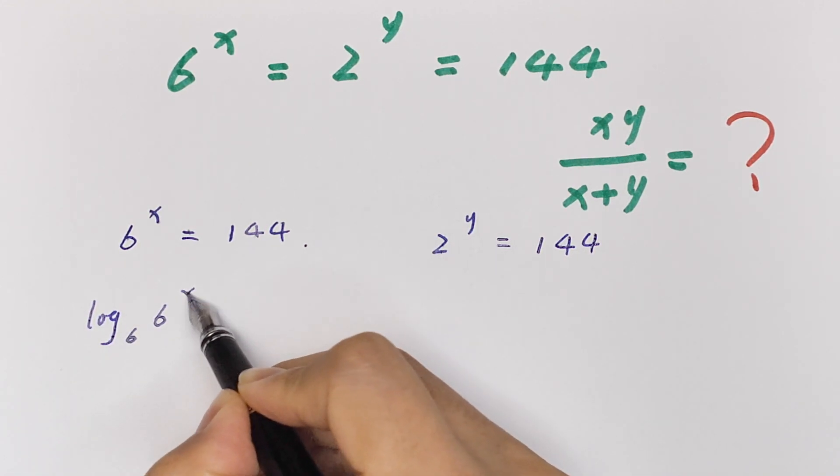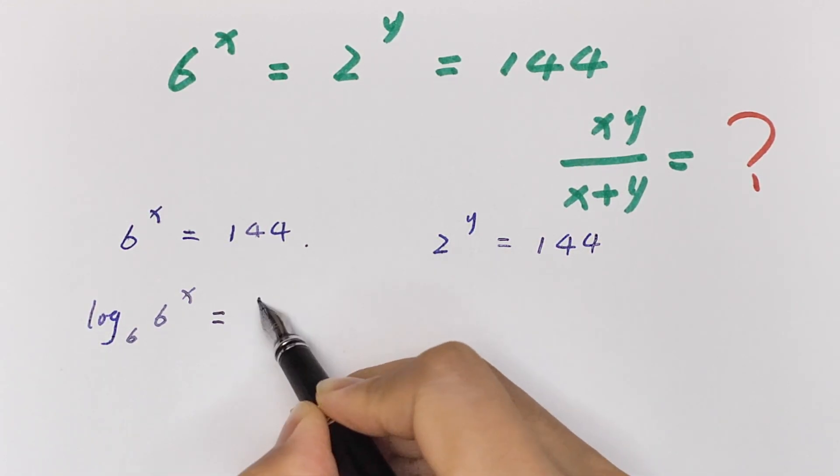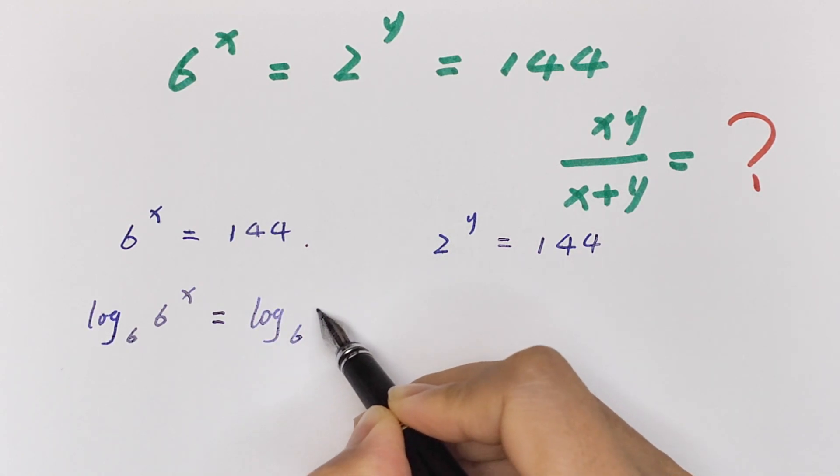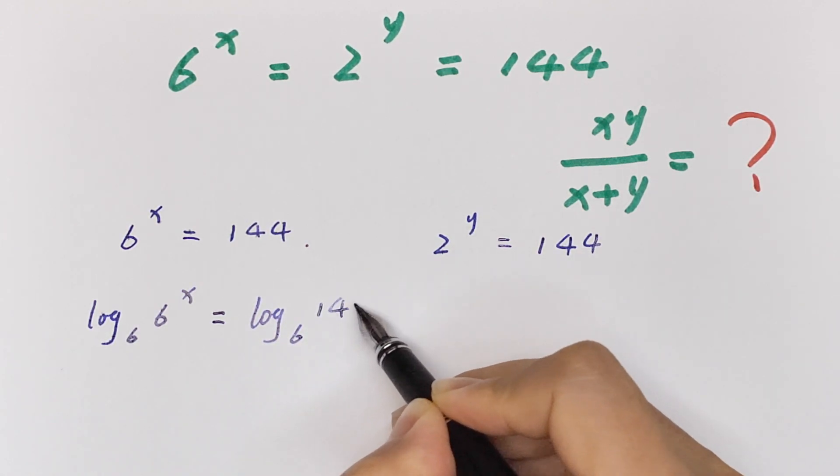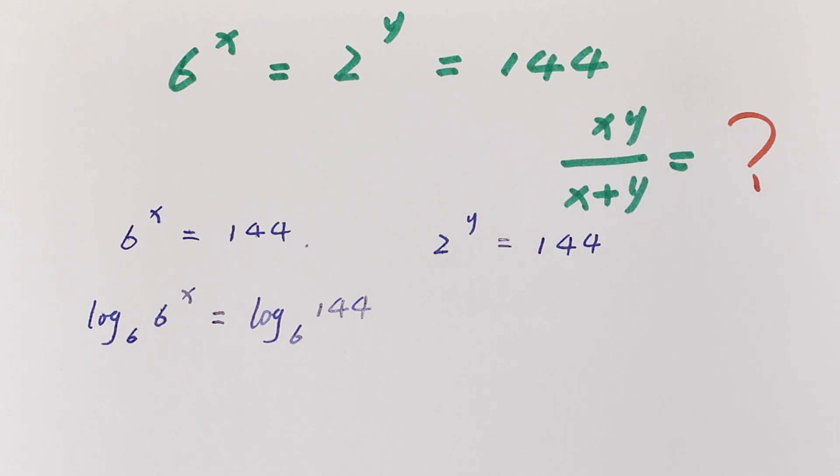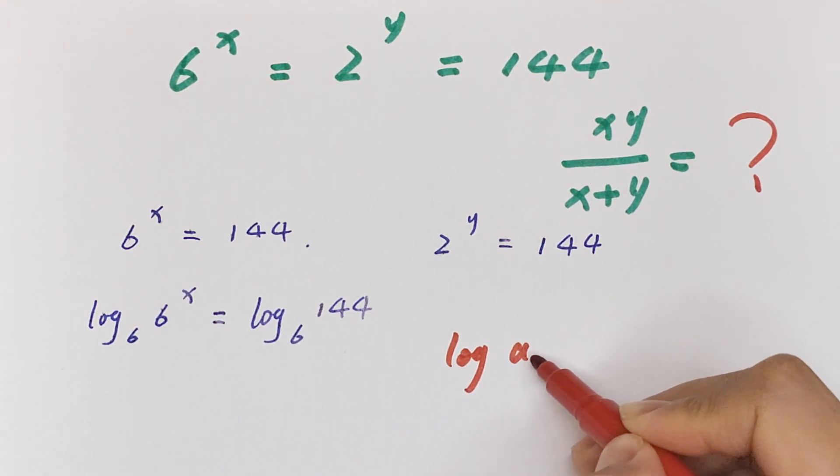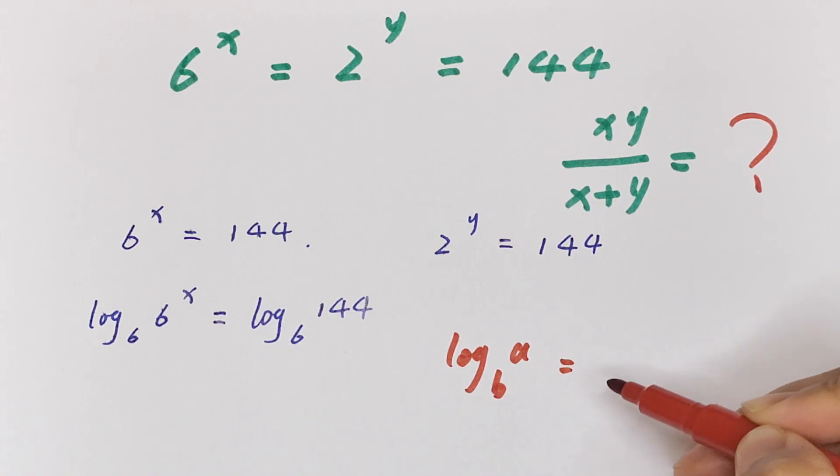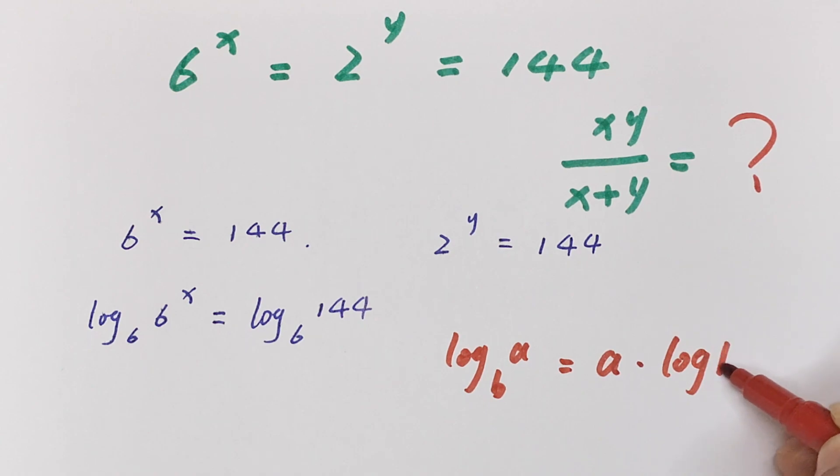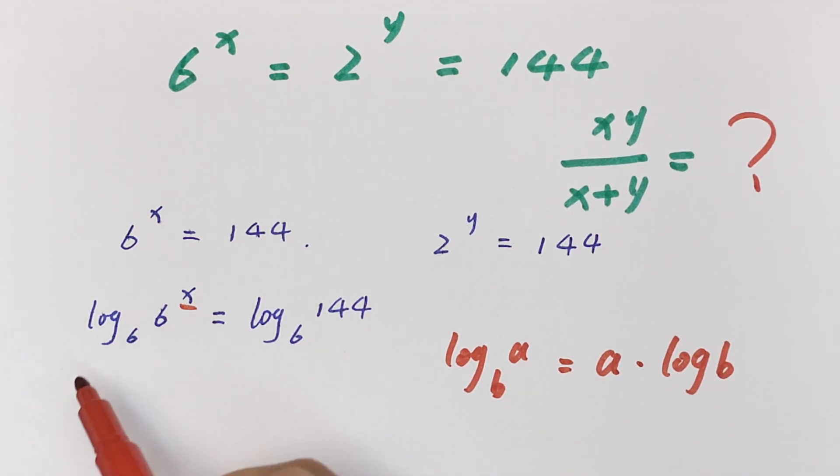6 to the power x is equal to log base 6 of 144. We will apply the log rule that log a base b is equal to a times log b. So this can be moved to the front.